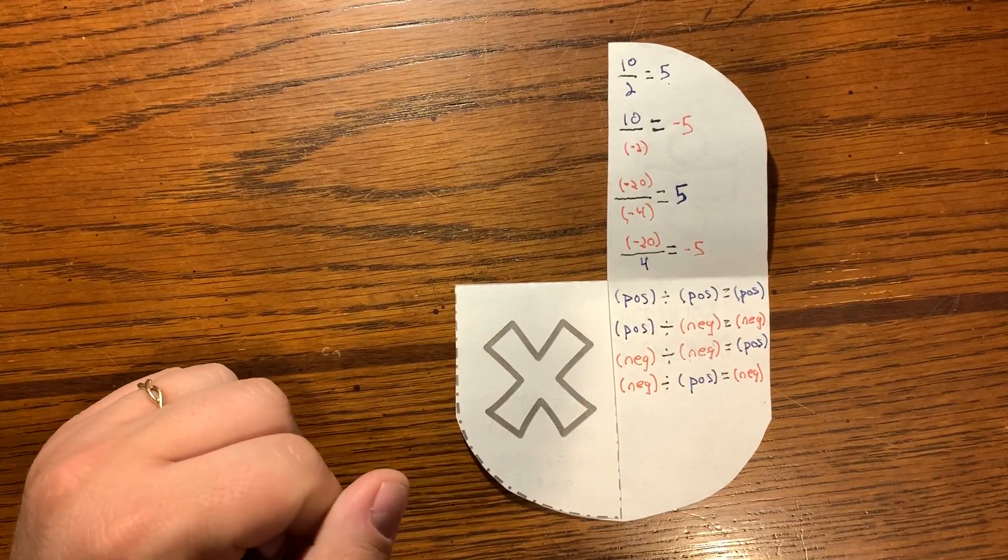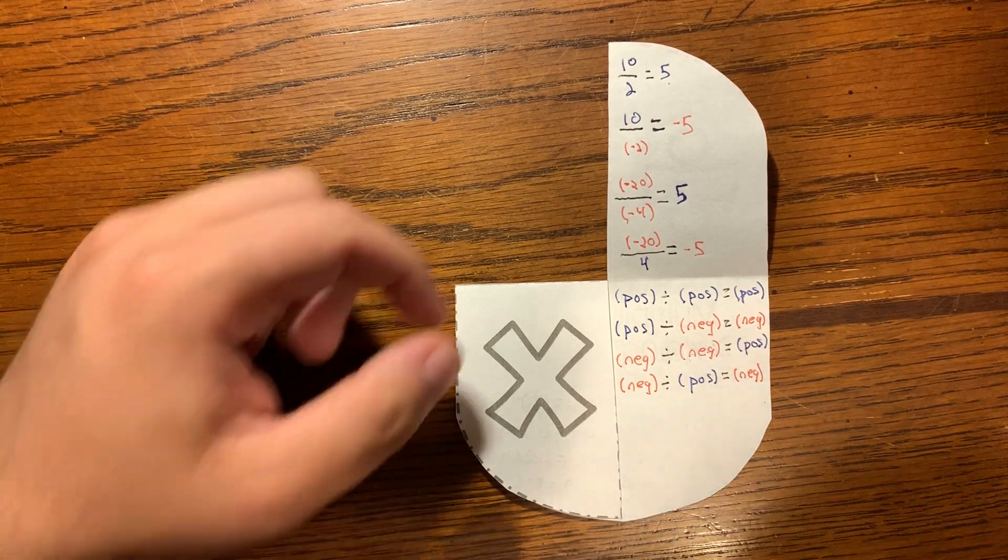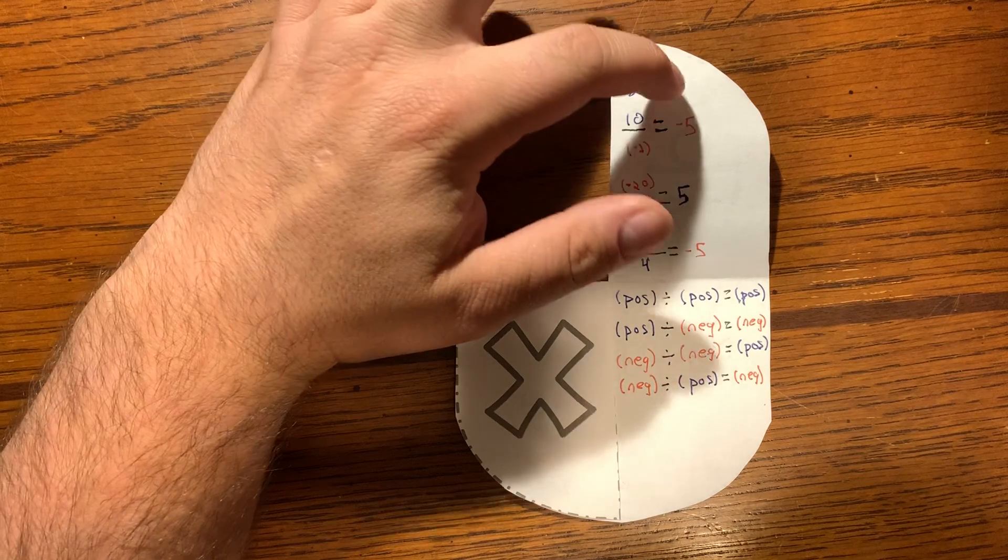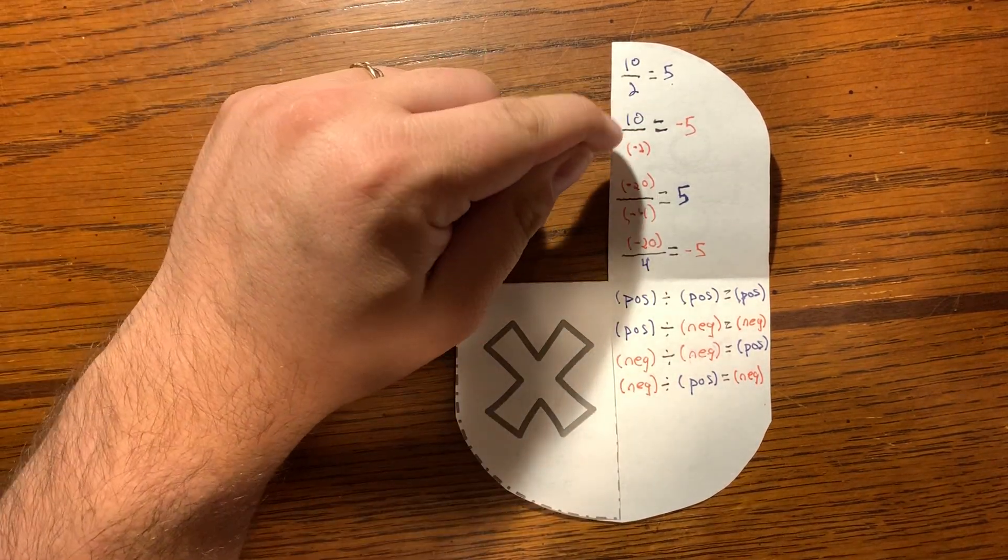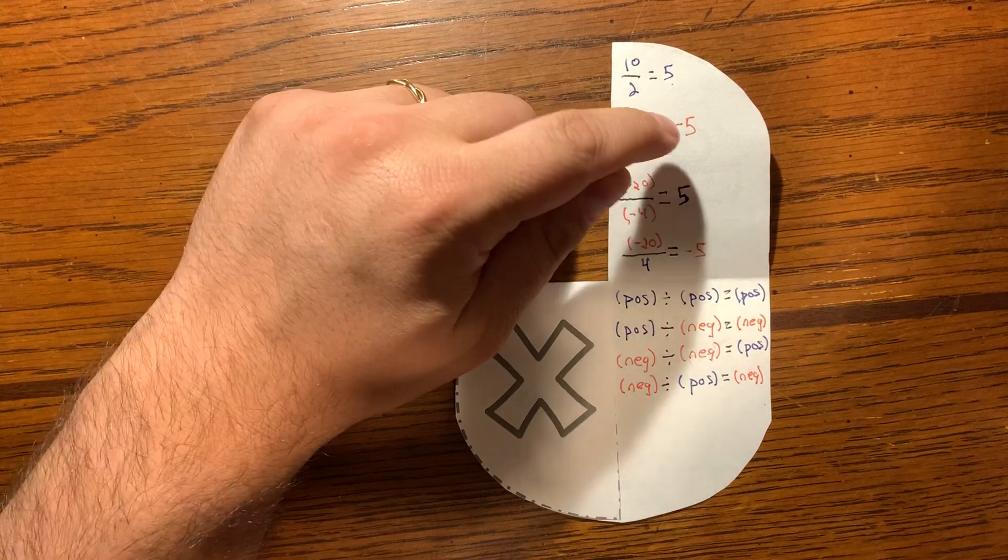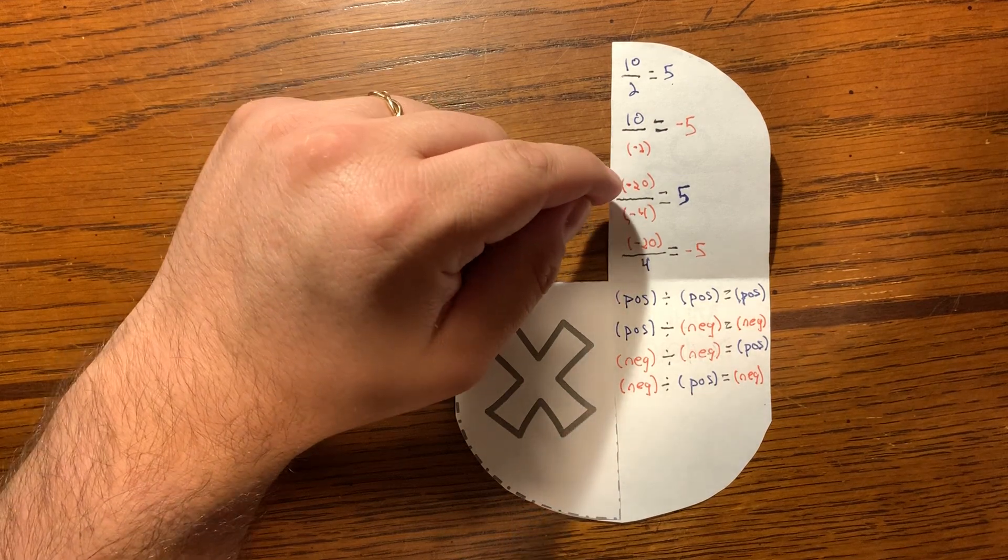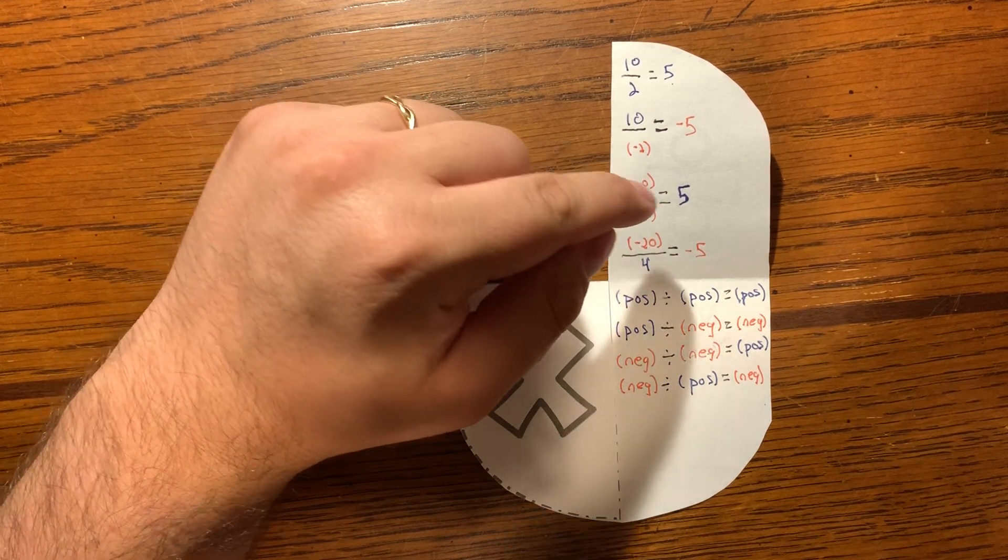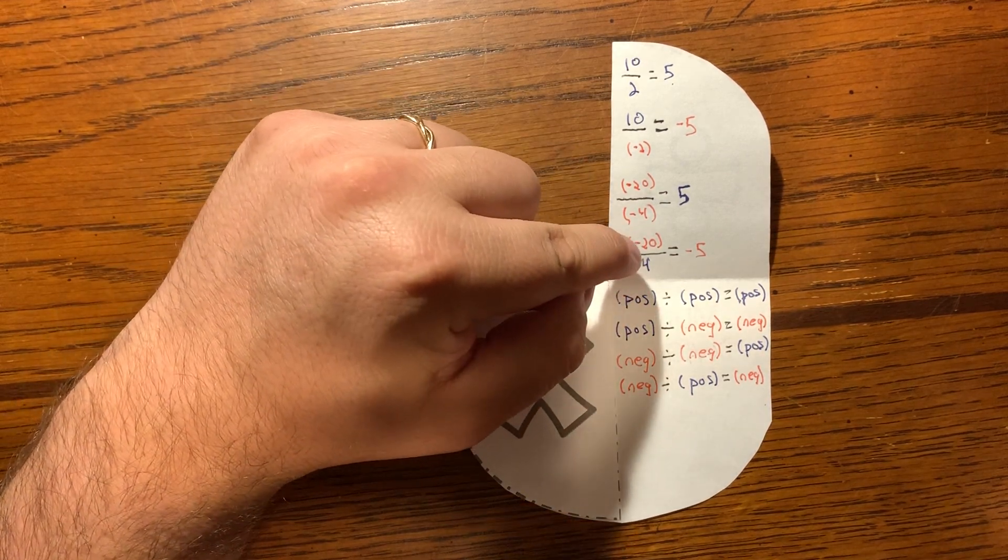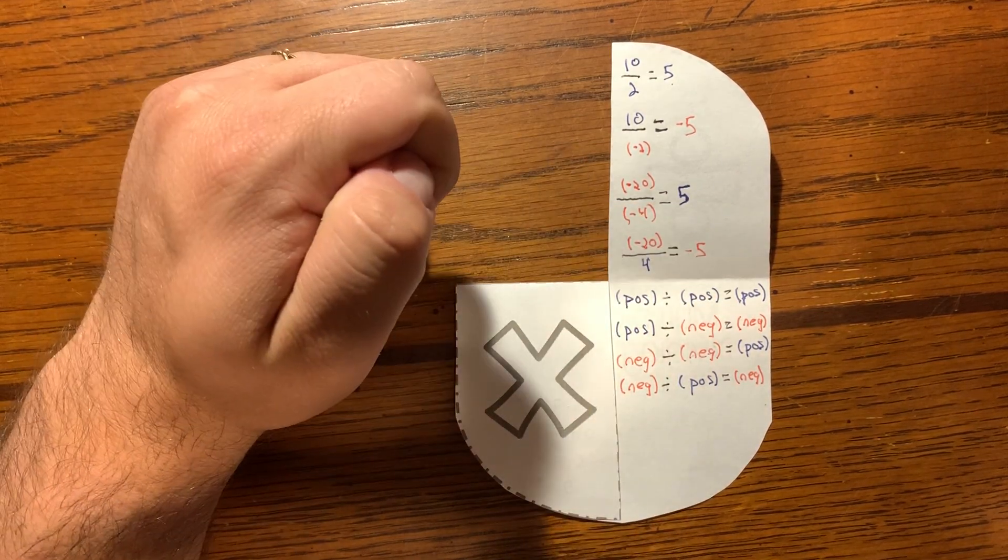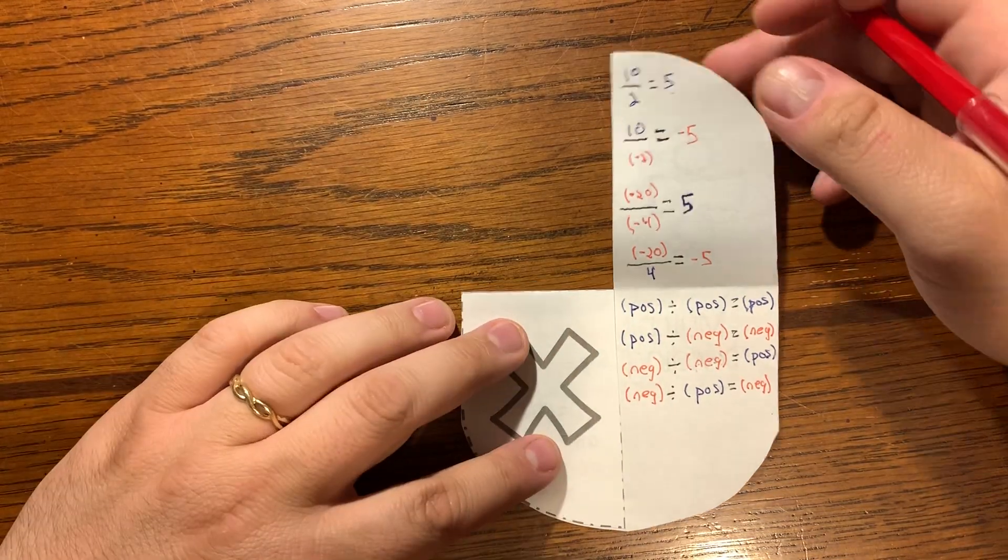And so those are your rules for division. All right, so positive divided by positive, like 10 divided by 2, is going to be a positive 5. Positive divided by negative, 10 divided by negative 2, would be a negative 5. Negative divided by negative, negative 20 divided by negative 4, is positive 5. And negative 20 divided by positive 4 is going to be negative 5 - that's a negative divided by positive. So there you have it for your rules.